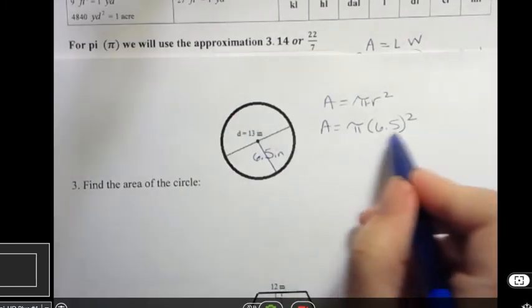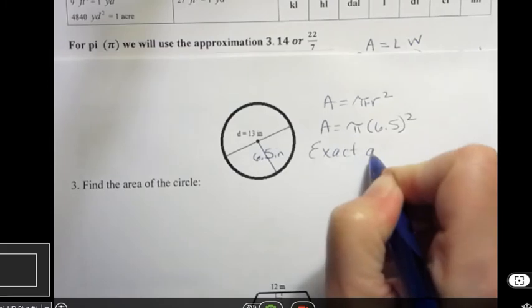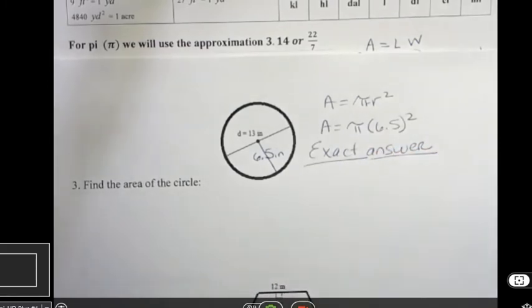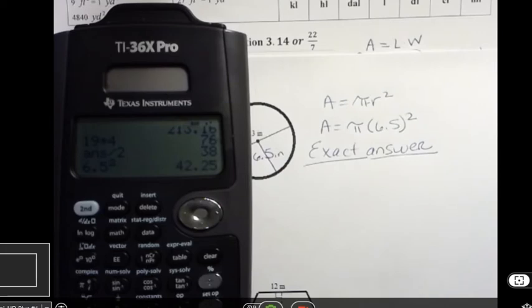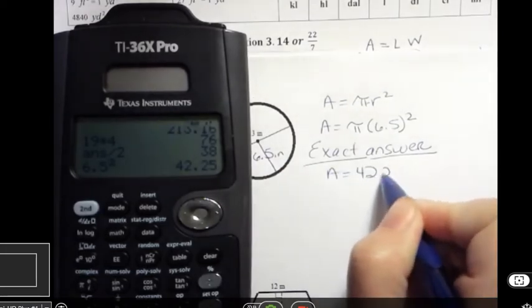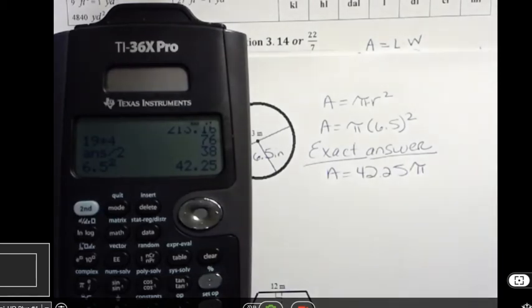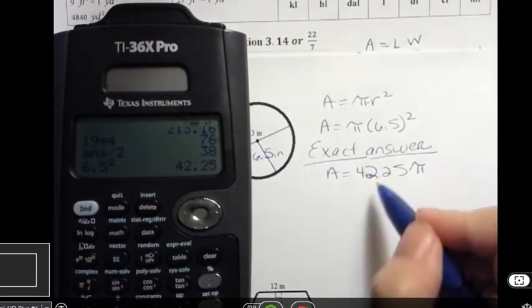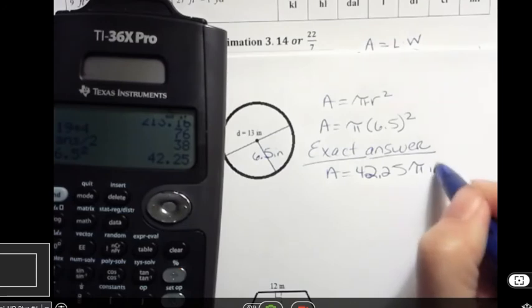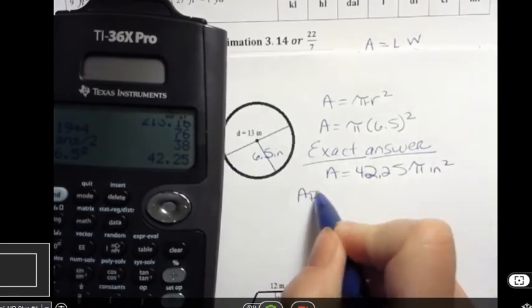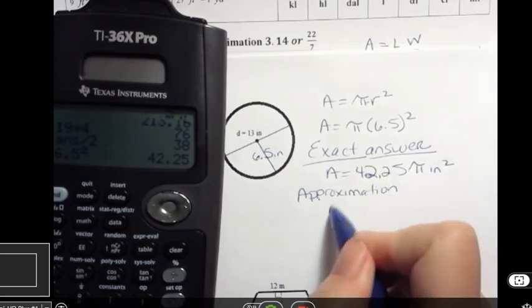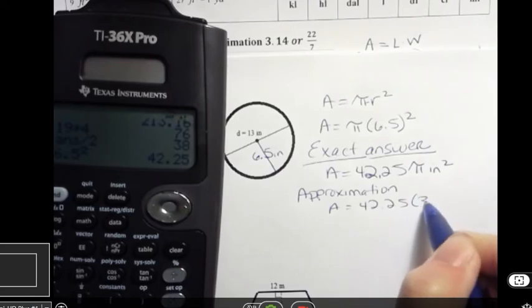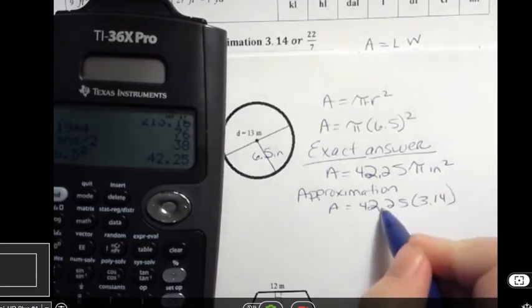Now, if you do this, and they ask you for an exact answer, that means they don't want you to approximate pi, because that makes it obviously not exact at that point, because you've approximated. So what they want you to do for an exact answer is just take your 6.5 squared, and that would be 42.25, and just leave the pi in there. If you leave pi, then we say that that is exact. But our units were inches, so we're talking about inches squared.